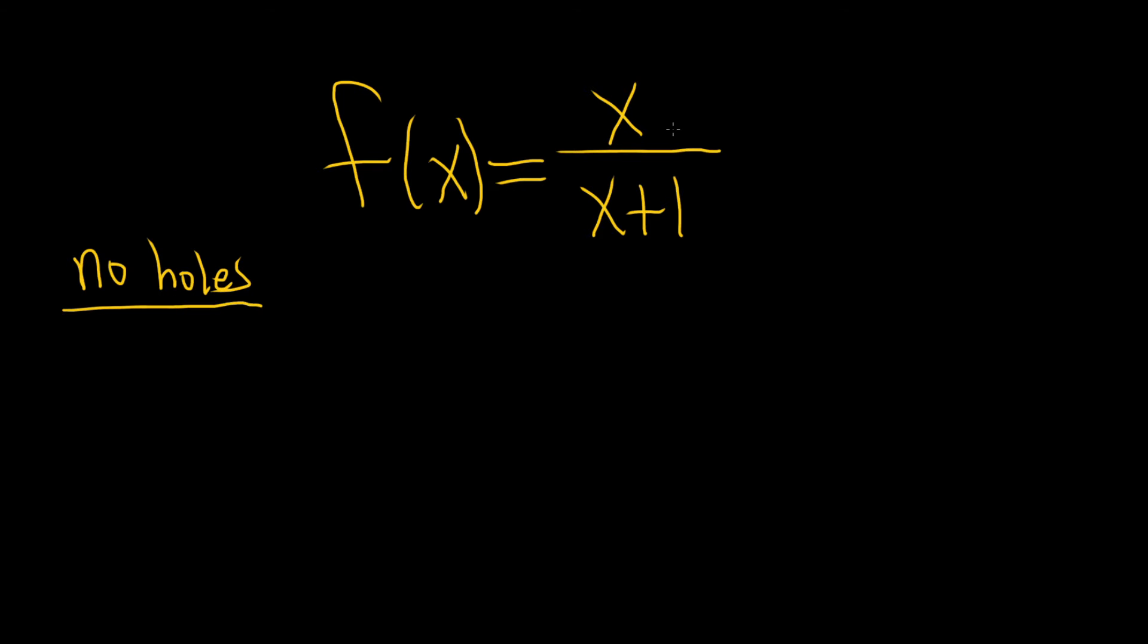If instead it was something like x times (x minus 2) over (x plus 1) times (x minus 2), say it was this instead, then you would simplify. And then you would get a hole at whatever makes that undefined. So you would get a hole at 2, because that makes this 0 over 0.